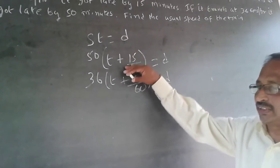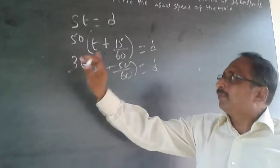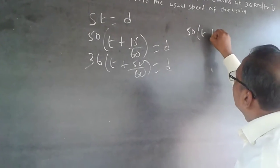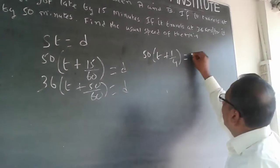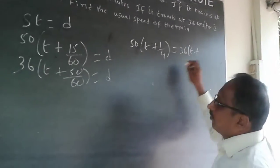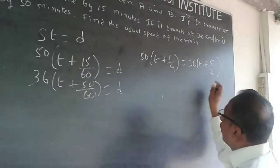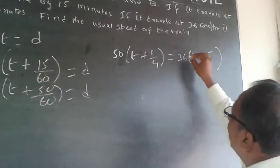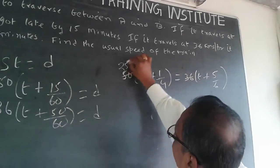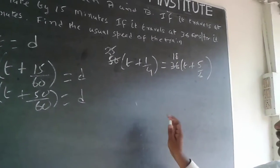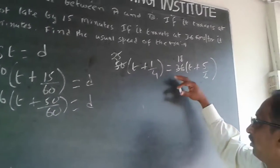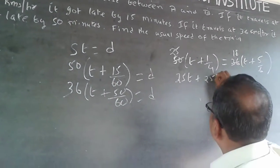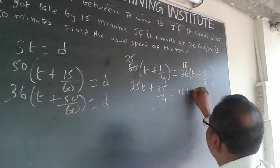Simplify and solve. Don't keep 15 by 60 — make it 1 by 4. So: 50 into (T + 1/4) = 36 into (T + 5/6). We can also simplify: divide both sides by 2, giving 25 into (T + 1/4) = 18 into (T + 5/6). The more you simplify, the easier the calculation. Expanding: 25T + 25/4 = 18T + 15.